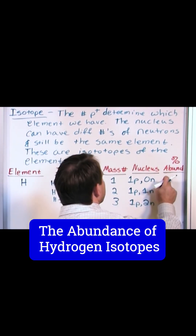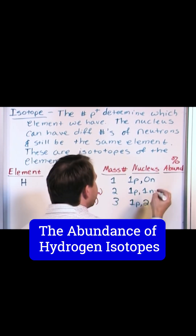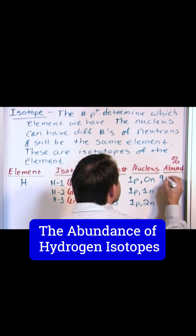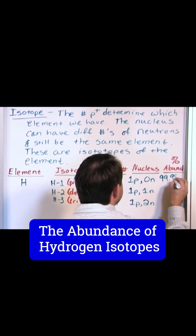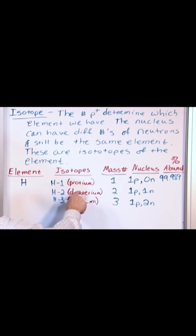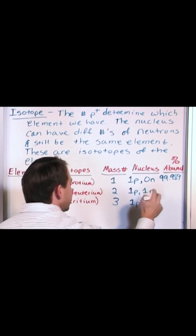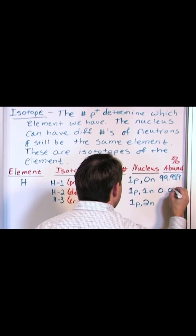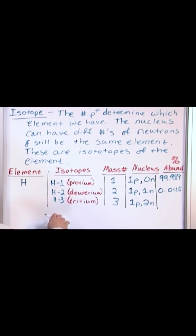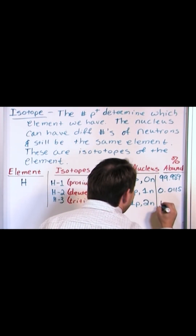So the percent abundance for the first guy, the pure hydrogen that we always talk about, is 99.989% — because this is a unit of percent. The second isotope, which has one neutron in the nucleus, is 0.0115%. And then finally, the tritium isotope with yet another neutron — two neutrons in the center — I'm just going to put tiny here.